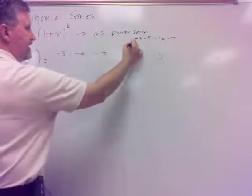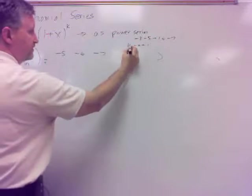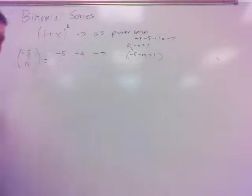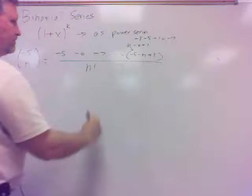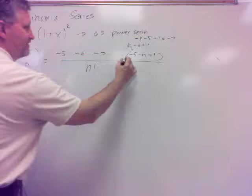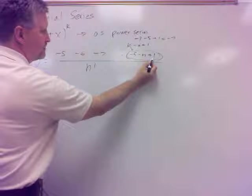But what is the stopping place here? Well, it's k minus n plus 1. I don't know the n, but I do know the k, so couldn't I say this is negative 5 minus n plus 1? That's going to be my stopping point. And then the bottom's going to be n factorial. Well, a couple of things. What can I do with this? Can I simplify that? That's minus 5 plus 1 be minus 4 minus n.